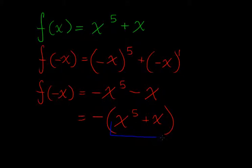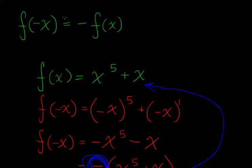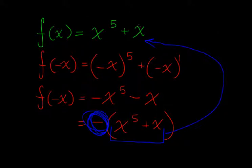This expression right here, x to the fifth plus x, is the same thing as this, except it's negative. And that is our, that satisfies our definition of an odd function. You have f of x with a negative. This is f of x, and this is f of x with a negative. So it is an odd function. f of x, in this case, is an odd function.